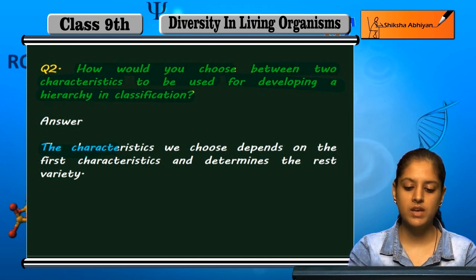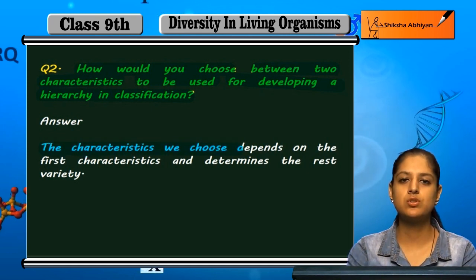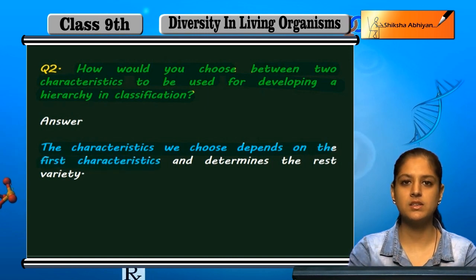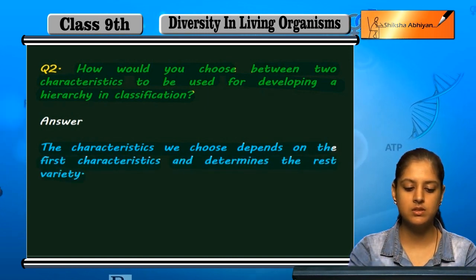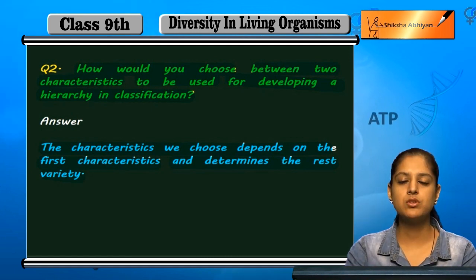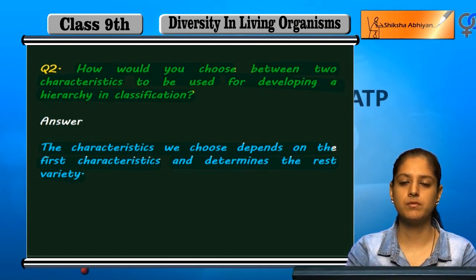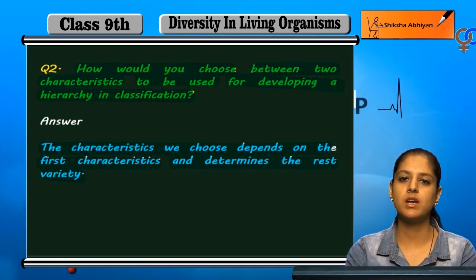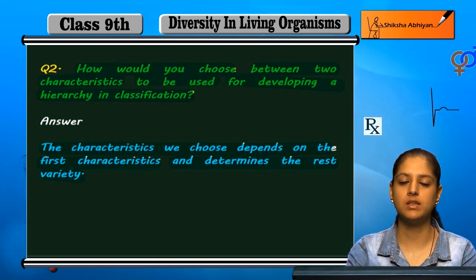The characteristics we choose depends on the first characteristics and determines the rest of the variety. The choice of the first characteristic is key, and variety can be seen later. So, the first basis of classification is the similarity in characteristics. After that, the variety can be seen.